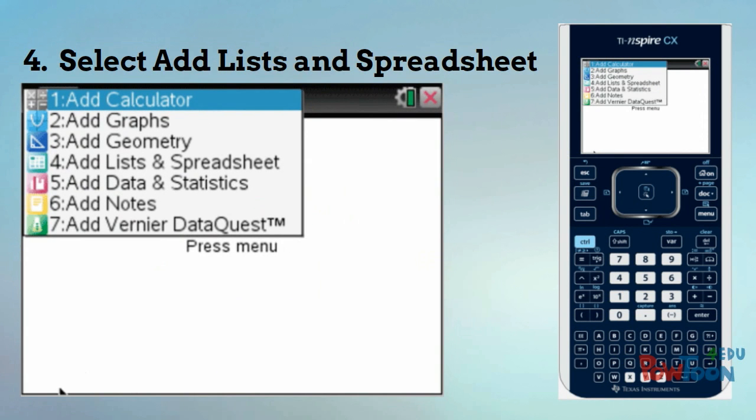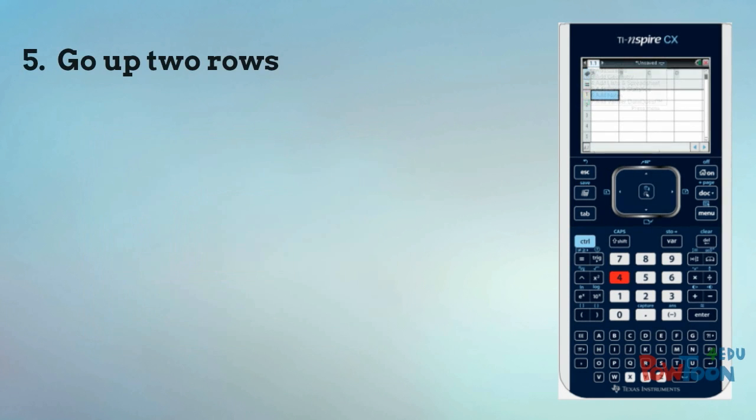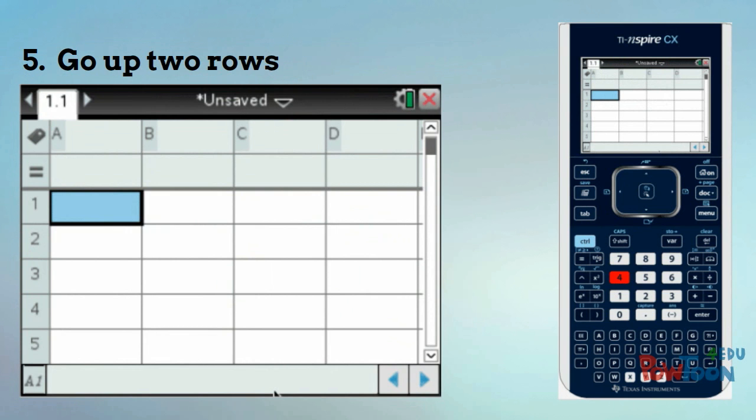The calculator will ask you what type of document you need. We're going to select 4 for Add List and Spreadsheet. When you select this option, the screen will look very similar to an Excel document.